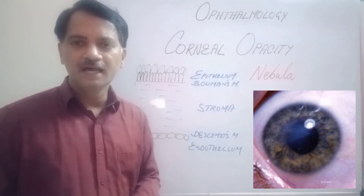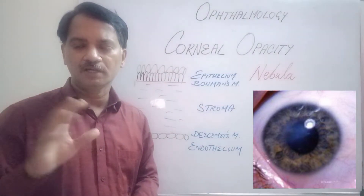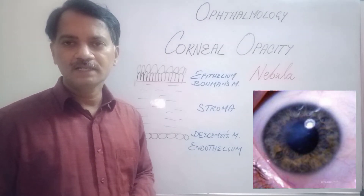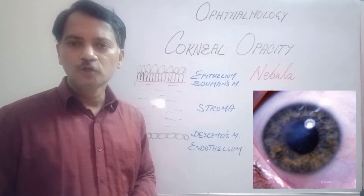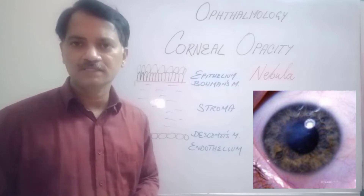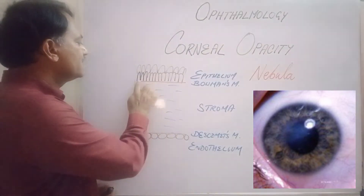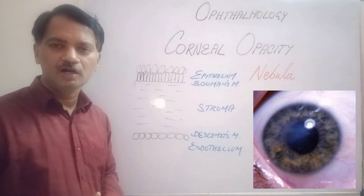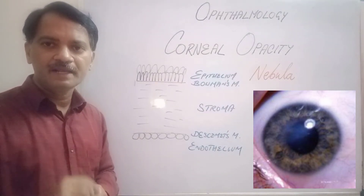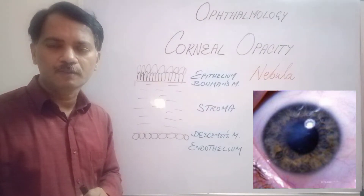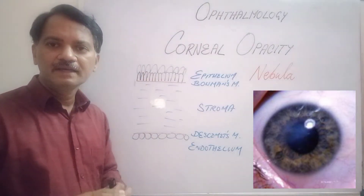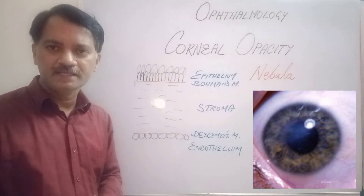If the nebular opacity is present in the central portion of the cornea, it will affect vision significantly. In those patients, we have to perform a lamellar keratoplasty. In this procedure, only Bowman's membrane and a small portion of the stroma need to be replaced — we remove just that thin layer from a donor cornea, place it in the affected area, and eliminate the opacity and symptoms.